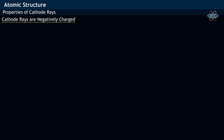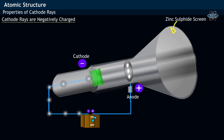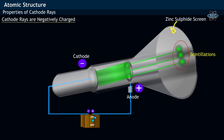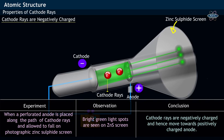Cathode rays are negatively charged. When the anode of a discharge tube is provided with holes and arranged with a photographic zinc sulphide screen, cathode rays passing through the perforated anode cause green light flashes or scintillations on the zinc sulphide screen, exactly in line with the holes on the anode. This phenomenon of light flashes is called fluorescence. The movement of invisible cathode rays towards the positively charged anode clearly indicates that cathode rays are negatively charged particles.